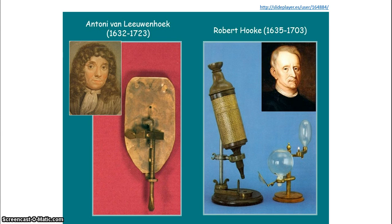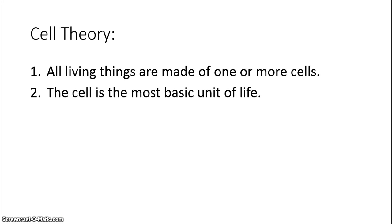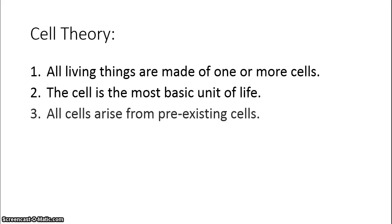Using experiments done by van Leeuwenhoek, Robert Hooke, and others, we come to the modern synthesis of what the cell theory is. The first tenet or statement of the cell theory is that all living things are made of one or more cells. The second is that the cell is the most basic unit of life. And the third is that all cells arise from pre-existing cells. I want to explore these in a little bit of detail today.